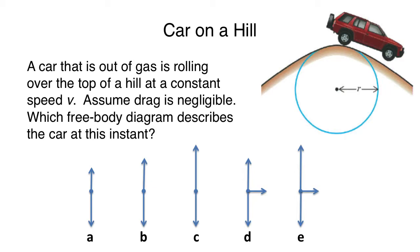One more piece of information you should know from last time. When we have uniform circular motion, which direction is the acceleration? Always toward the center of the circle. If that's true, what does the rest of what we've learned tell us about this free body diagram? Uniform circular motion requires that the acceleration points to the center. Try again and clearly identify which free body diagram it would be.